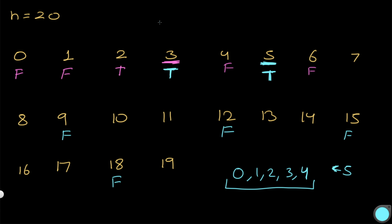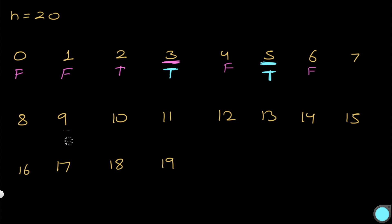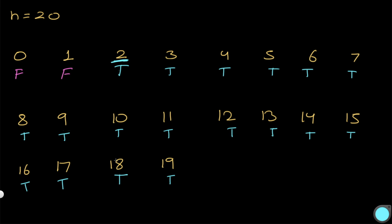Now we don't need the is_prime function at all. One important thing we've been doing is only looking at multiples for numbers that have a true value. By default, we initialize everything to true, and only change values to false when they're identified as composite. So at 2, it's true because nothing changed it to false. We then make all its multiples — 4, 6, 8, 10, 12, 14, 16, 18 — false.